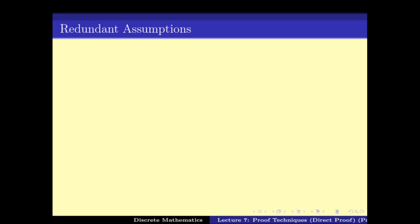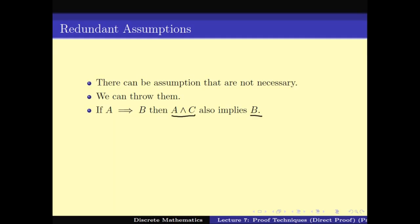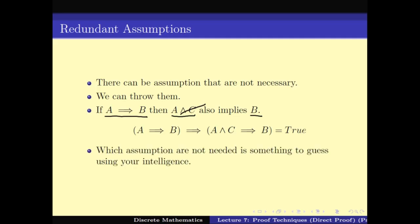Now there can be redundant assumptions, and those can be cleaned up. In other words, there can be many assumptions that are not necessary and only make the problem more complicated. So if we can throw them out, that will help us in simplifying the problem. If I have to prove A and C implies B, but I can already prove A implies B, then C is a redundant assumption. So A implies B is good enough to prove A and C implies B. One would like to find out which assumptions are redundant and throw them, but this can only come with practice or intelligence.